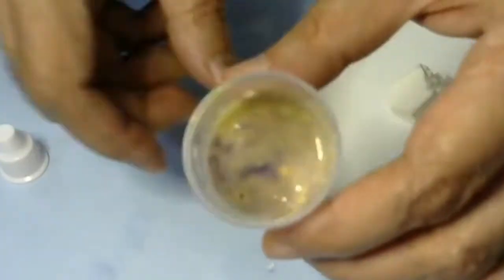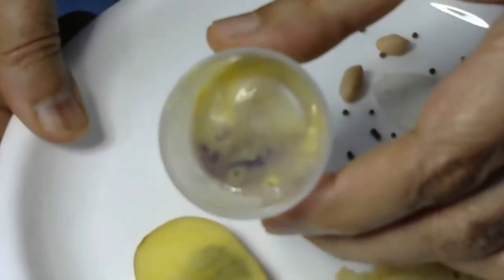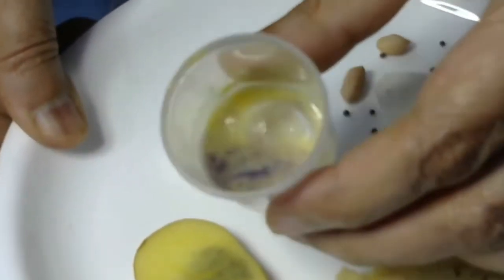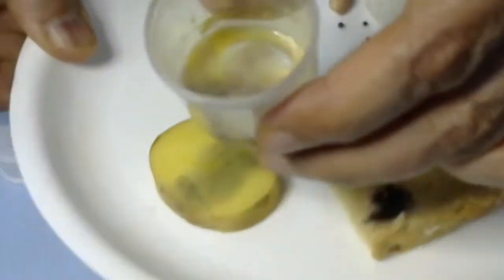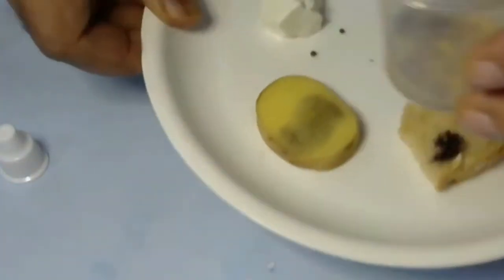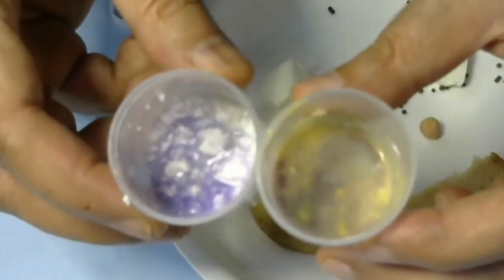If you look at the besan solution, this has also become slightly purple, but because besan was already yellow, the purple color is not very clearly visible. But when you do it, you'll see that it turns into purple color. This is a simple solution to see the presence of protein.